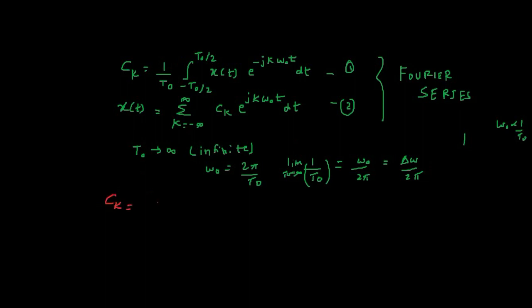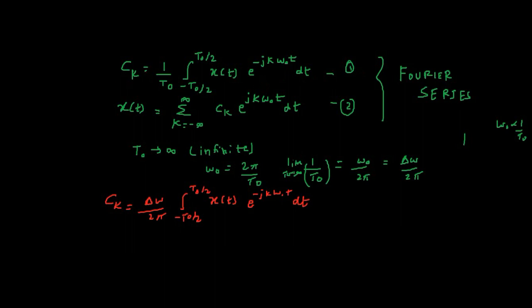If we directly substitute infinity for T0, then 1 over infinity is 0 and the whole expression becomes 0 - so this is not a straightforward simplification. We will have to make use of the second equation - the synthesis equation - to get the Fourier transform equations. Let me take a new piece. For an aperiodic signal, we have assumed it is a periodic signal with infinite time period T0, so we can represent the aperiodic signal x(t) in terms of Fourier series.